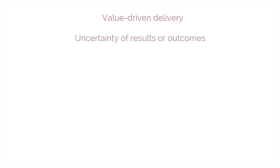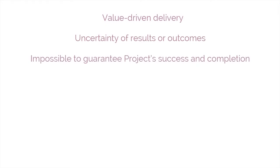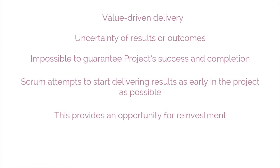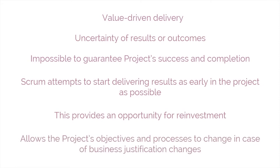One of the key characteristics of any project is the uncertainty of results or outcomes. It is impossible to guarantee project success at completion, regardless of the size or complexity of a project. Considering this uncertainty, Scrum attempts to start delivering results as early in the project as possible. This early delivery of results and thereby value provides an opportunity for reinvestment and proves the worth of the project to interested stakeholders. Furthermore, Scrum's adaptability allows the project's objectives and processes to change if its business justification changes. Although the product owner is primarily responsible for business justification, other team members also contribute significantly.